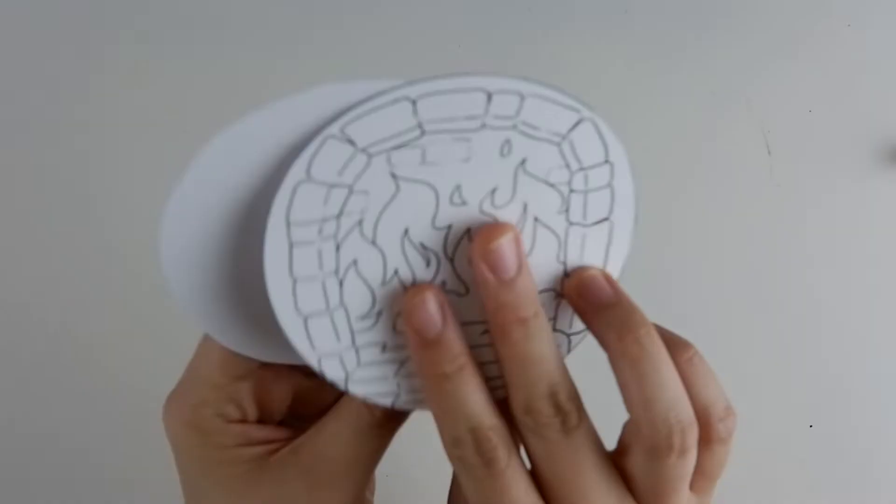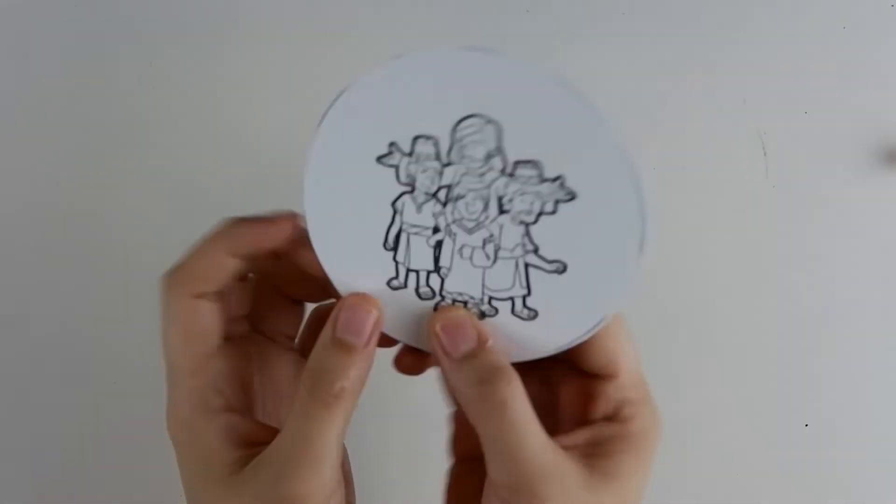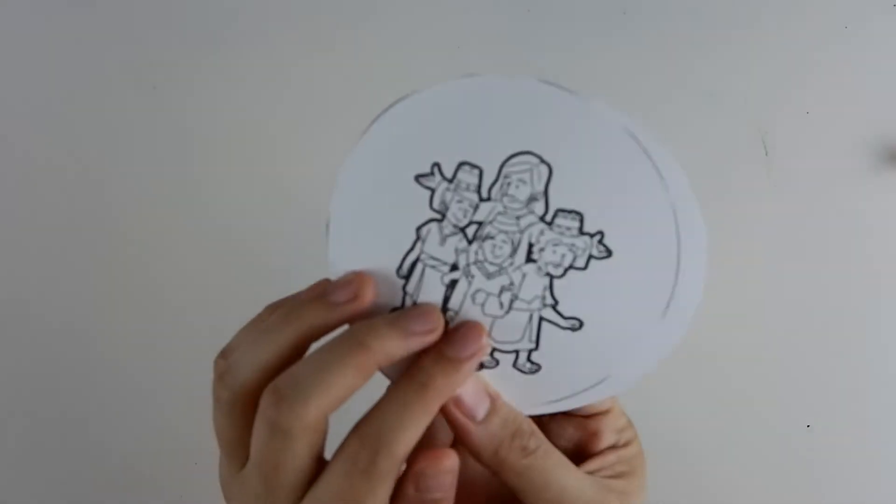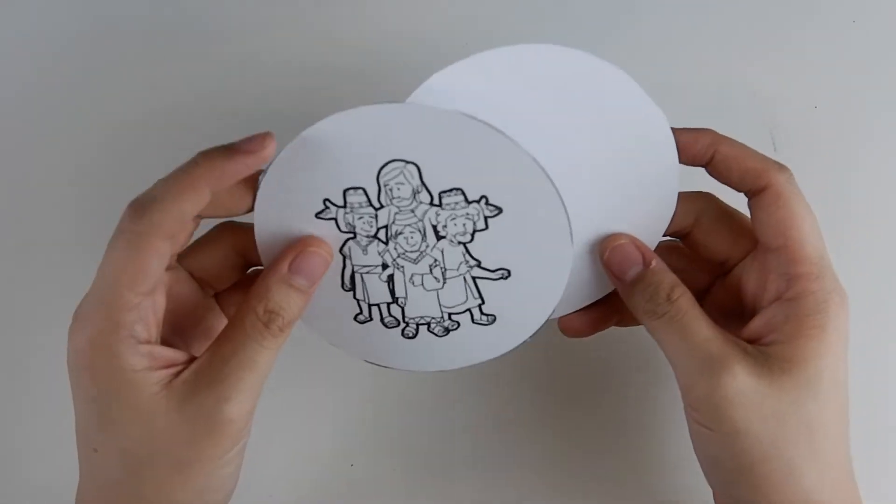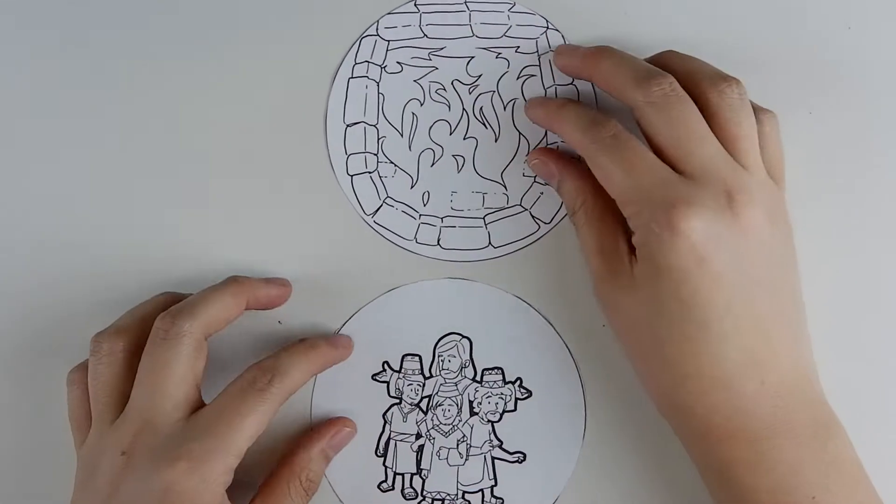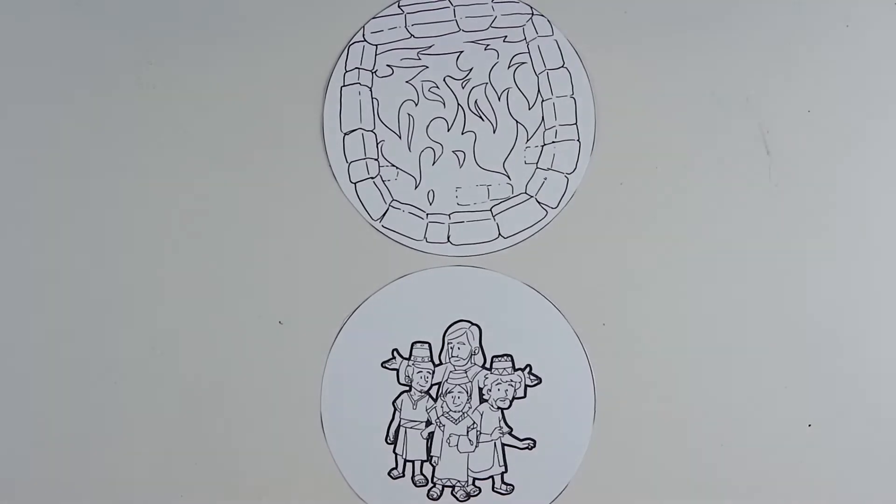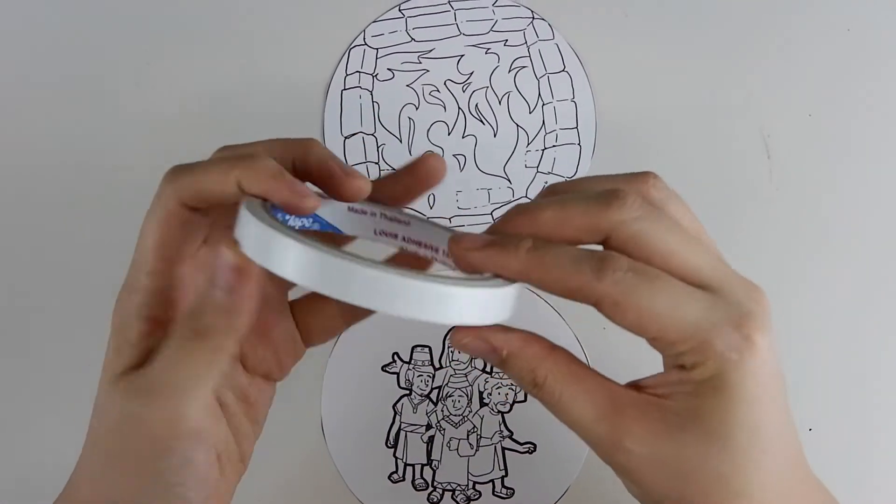Cut out one of each circle. We will be sticking them back to back. Be sure that they are carefully aligned so when the kids spin the pencils, the furnace isn't slanted or skewed. I found it easier to align the circles by taping and aligning the top portion first.